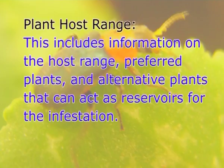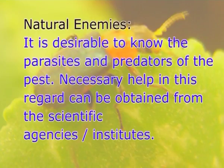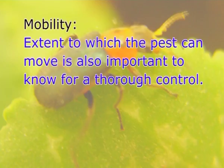Plant host range: this includes information on the host range, preferred plants and alternative plants that can act as reservoirs for the infestation. Natural enemies: it is desirable to know the parasites and predators of the pest; necessary help in this regard can be obtained from scientific agencies or institutes. Mobility: the extent to which the pest can move is also important to know for thorough control.